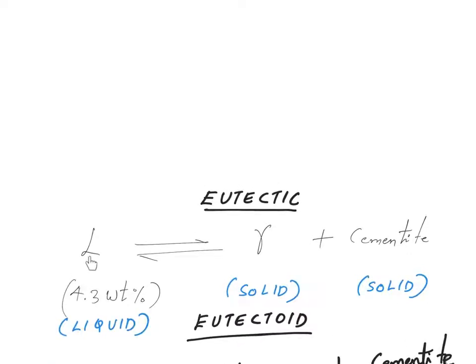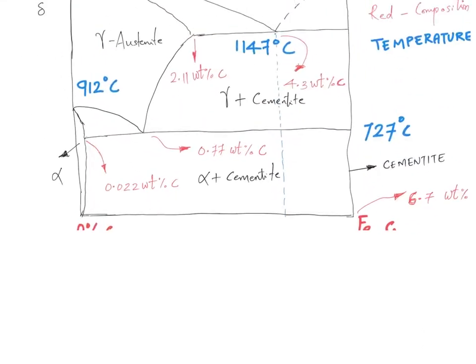We have a liquid phase where there is 4.3 weight percentage of carbon. It is getting decomposed into a gamma phase, which is a solid gamma austenite phase, and a cementite phase, which is another solid phase. That is the reaction that happens at that particular point.